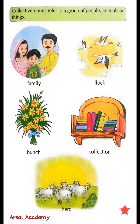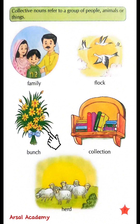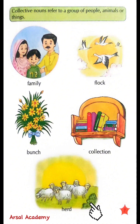Collective nouns refer to a group of people, animals, or things. Examples: Family, Flock, Bunch, Collection, Herd.